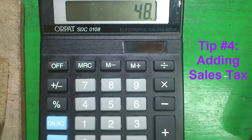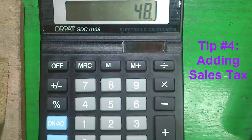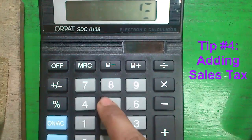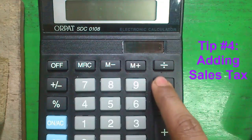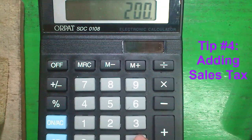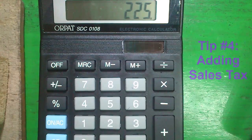Tip number 4, tax calculation. Say I want to add 12.5% tax with 200. So I will enter 12.5 divided by 100 plus 1 multiply 200 and press equals. It is 225 after adding tax.